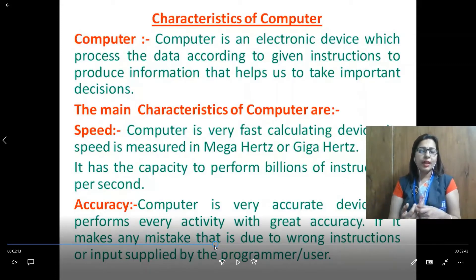It works on IPO cycle: input, process and output. Whatever we give to the computer as an input that is processed by the processing device that is CPU, and after processing it goes to the output device and shows the result. That result is known as output.